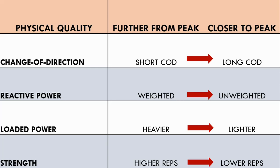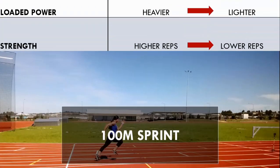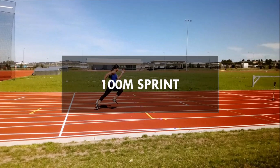Putting this all together, a periodized plan may look something like this. Every quality is being trained but the emphasis of each quality is adjusted over time. This way the athlete will never be completely out of shape for their sport, but it also gives enough variation to allow progress to continue.